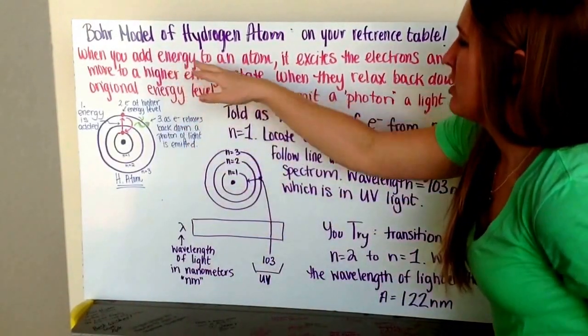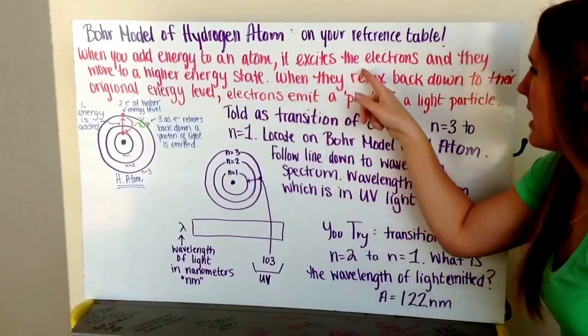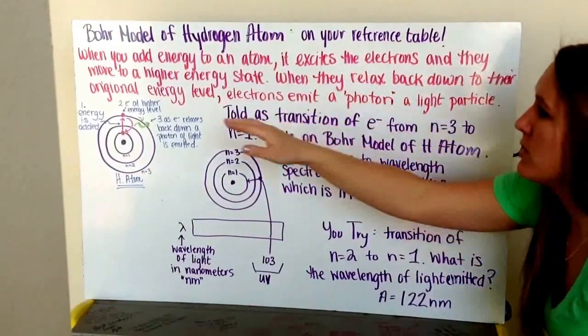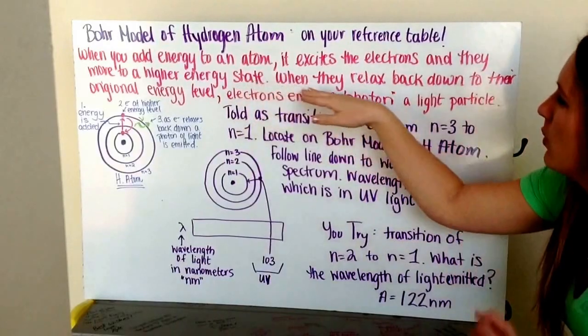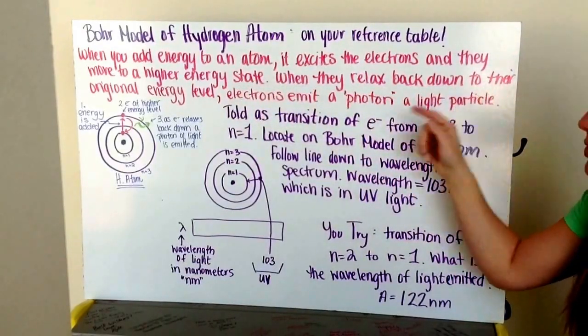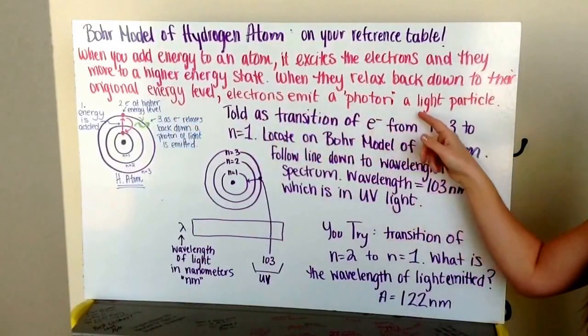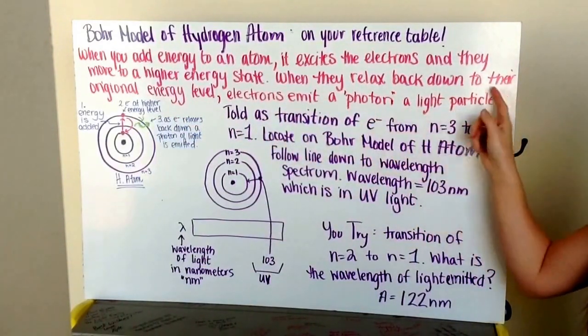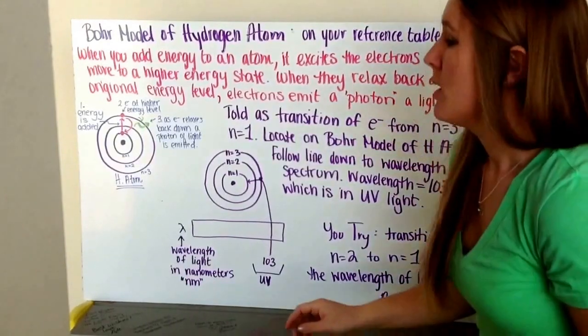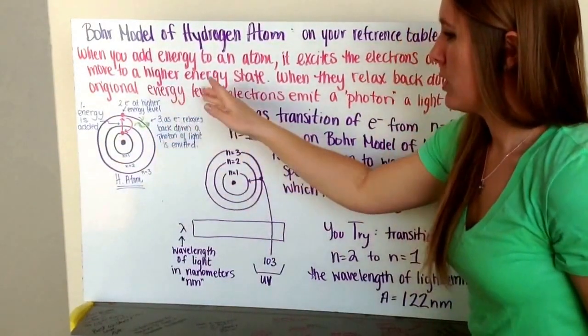So when you add energy to an atom, it's going to excite the electrons, and they're going to move to a higher energy state. When they relax back down to their original energy level, electrons emit a photon of light, which is a light particle. We call that a photon.